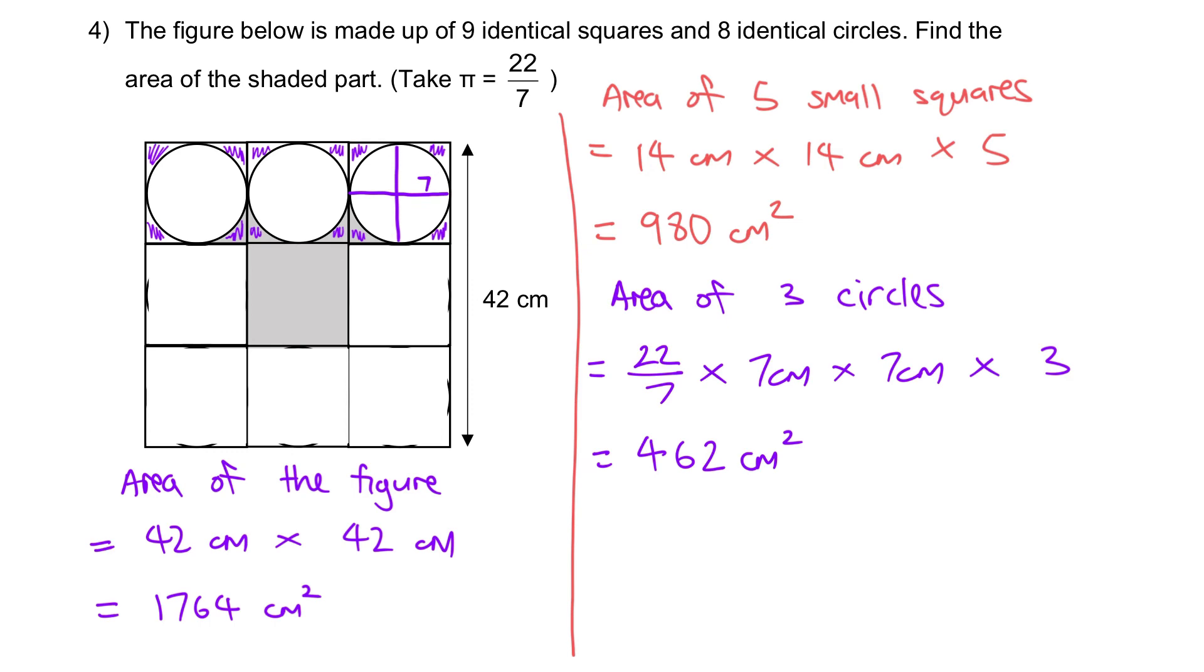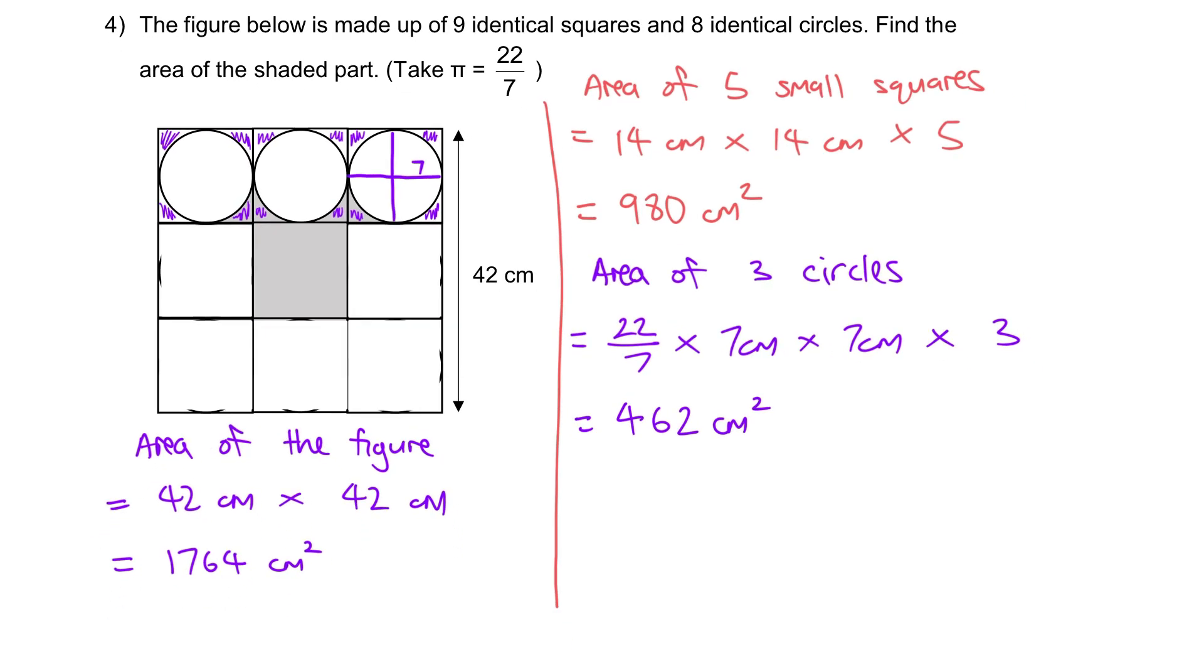Finally, moving on to the answer: area of the shaded part, which is equal to 1,764 minus 980 minus 462 equals 322 cm squared.